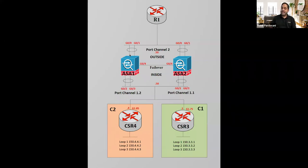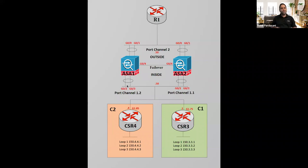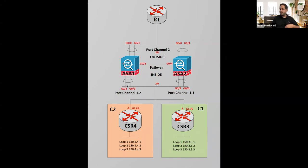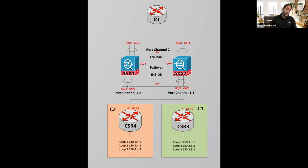If you look at ASA1, it has two interfaces going toward the service provider — maybe R1 is the PE router — and two interfaces going toward the ISP, and two interfaces going toward the customer. The reason for two interfaces is redundancy: you could do port channeling for redundancy from the customer's perspective. With failover you have redundancy for the ASA, and with port channeling you have redundancy for the interface. Your multi-context does support port channeling, but there are some restrictions we'll discuss during configuration.